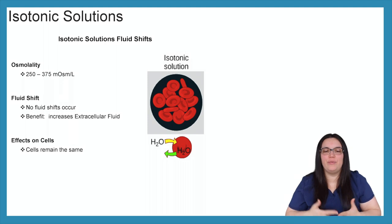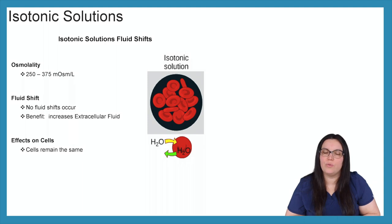So again, we're going to be looking at fluid shifts when it comes to isotonic solutions. We know that we have an osmolality between 250 and 295, so fluid shifts really aren't going to occur. So this is really beneficial when we need an increase in extracellular fluids such as with our hypovolemia patients. When it comes to the cells, the cells remain the same. There really isn't a difference because again, the osmolality is the same as our blood products.